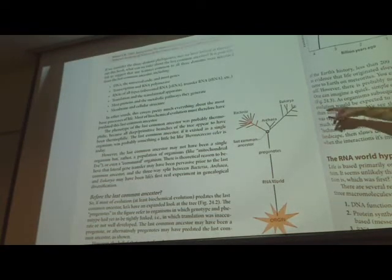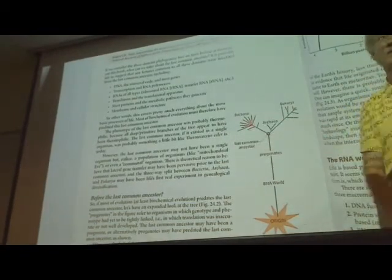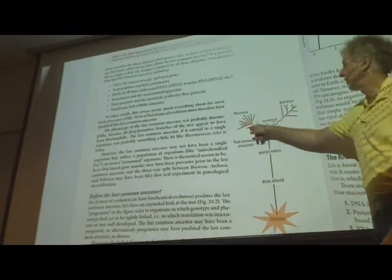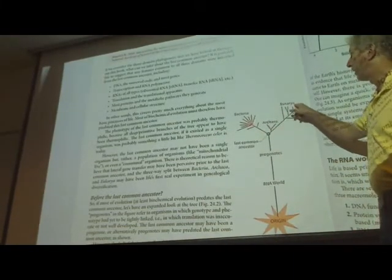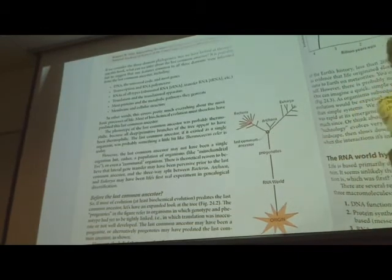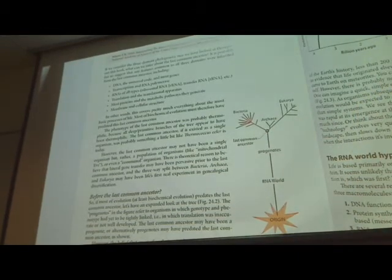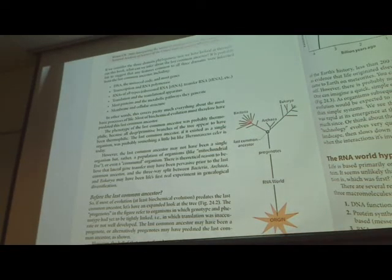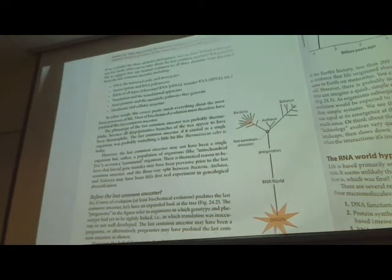So here's a phylogenetic tree that we've looked at many times in this class. Bacteria, archaea, and eukarya. Those three organisms come together into a last common ancestor. We identified the location of this in the tree using pairs of duplicated genes like EFTU and EFGAE.